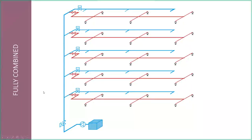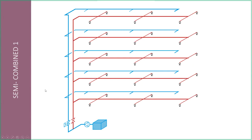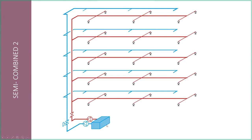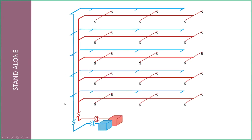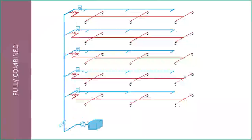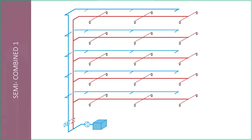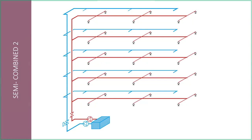A few diagrams showing shared water supply options. A fully combined system: shared tank, shared pump, shared riser, branching off at each floor for sprinklers. Semi-combined option one: shared tank, shared pump, separate riser for sprinklers. Semi-combined option two: shared tank, separate pump, separate riser. And a standalone system: completely separate tank, pump, and riser. Each has its pros and cons, and we can talk about those in more detail in a future episode.